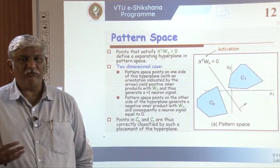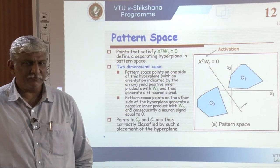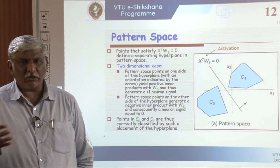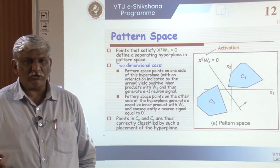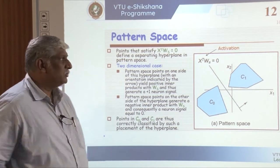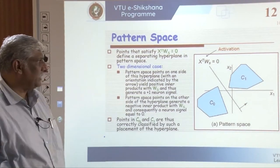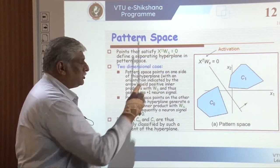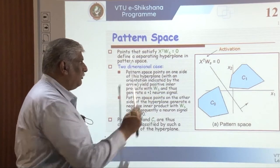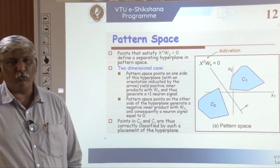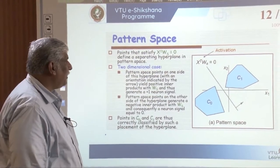The second approach is based on weights. For one pattern or category, I will have one set of weights, and for another pattern or category, I will get another set of weights. Based on the weight space, we can also categorize incoming data. We will start first with the pattern space. The points that satisfy X transpose — where X are the input vectors and W are the different weights — equal to zero, define a separating hyperplane in pattern space.